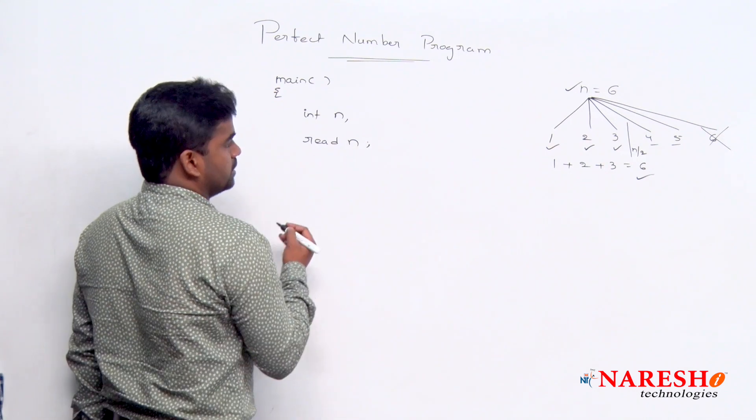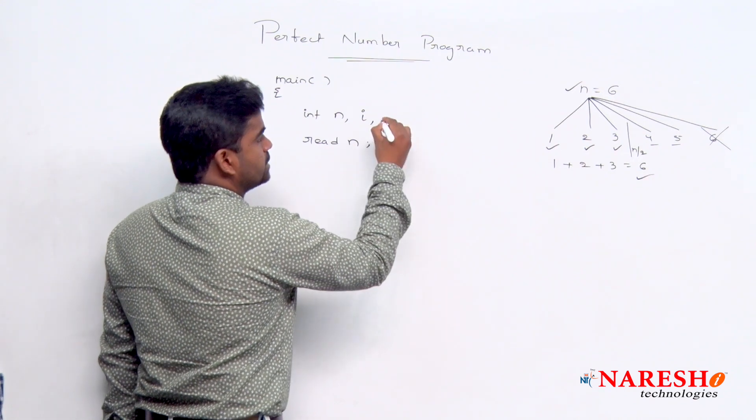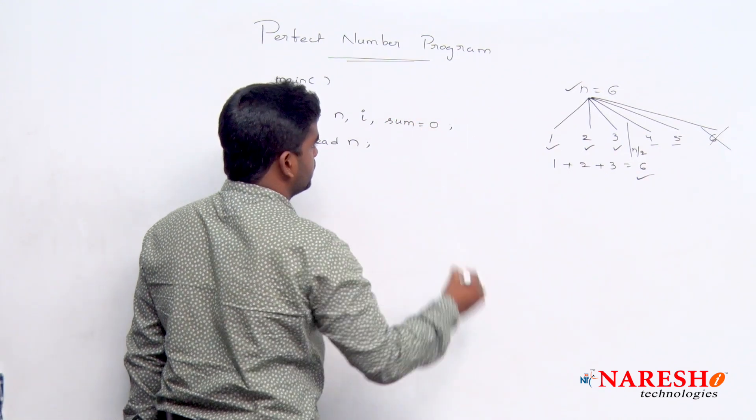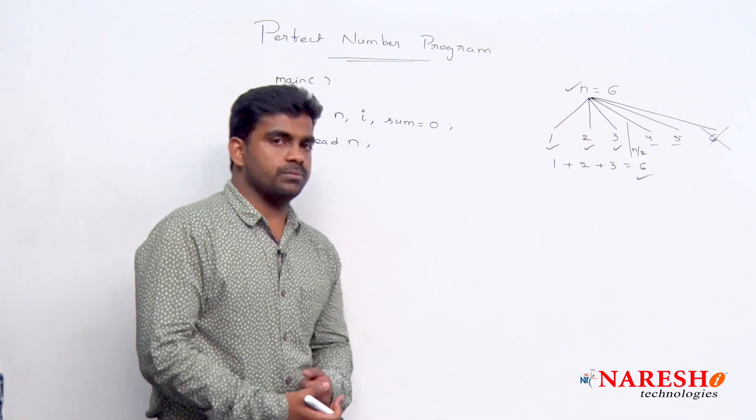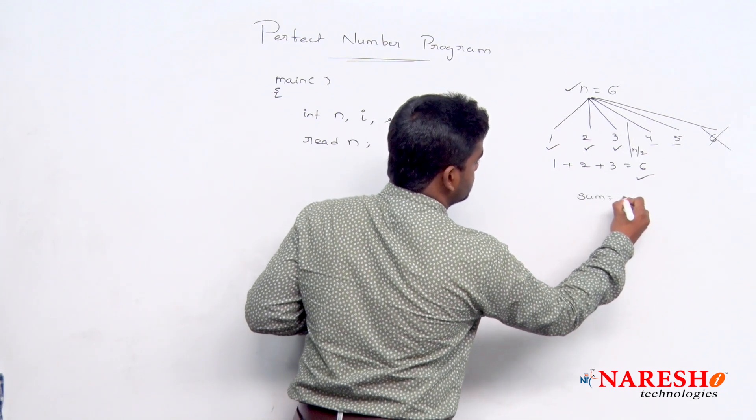And here, just to repeat one loop, we are taking i. And just to find that sum of factors, we are declaring one variable with the value 0. Sum value is 0. It starts with 0 because we are counting. Initially, sum value is 0.